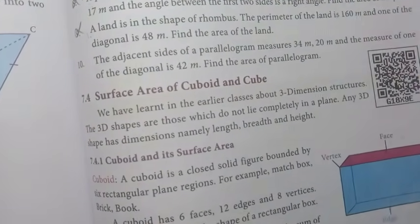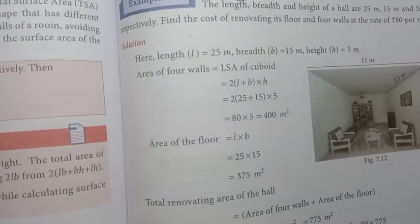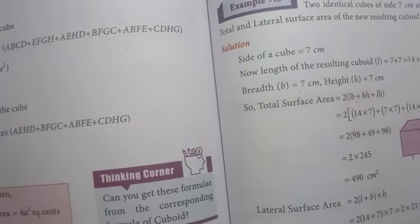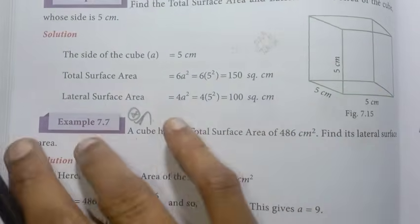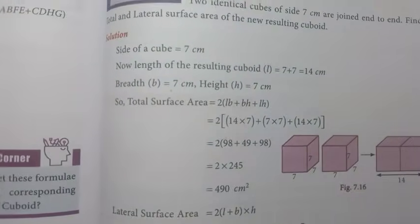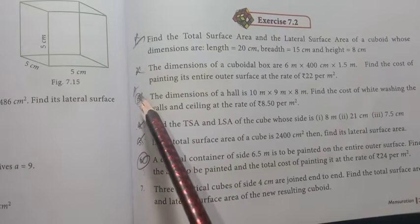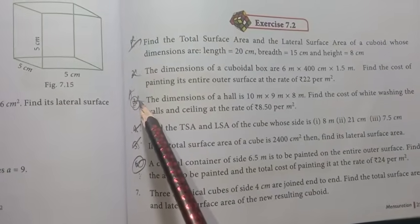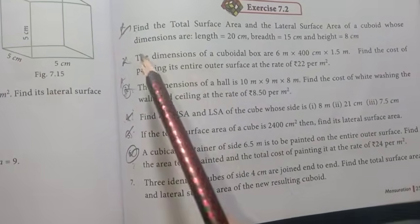Page 253: 8th and 9th important questions. Next page number 255, Example 7.5 important, Example 7.6, Example 7.7, and Example 7.8. Exercise 7.2: 1st, 2nd, 3rd — previous year annual examination. 1st, 2nd, 3rd, 4th, 5th, 6th all important questions.